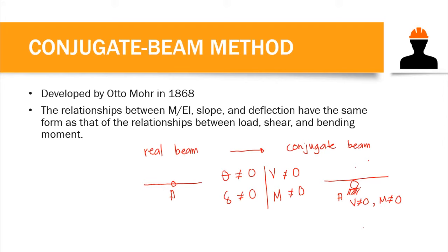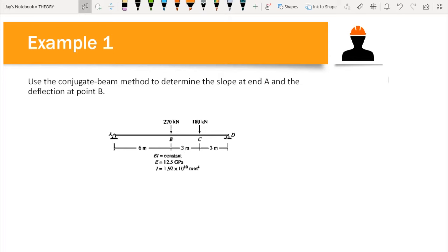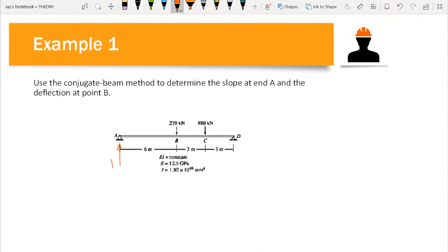Now let's solve a problem using the conjugate beam method. In this first example, we use the conjugate beam method to determine the slope at end A and the deflection at point B. First, we draw the shear and moment diagram of the beam, and to do that we need to compute the reactions at A and D, which we call Ay and Dy.